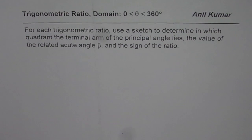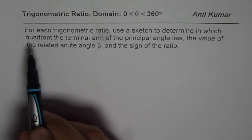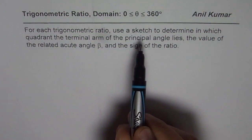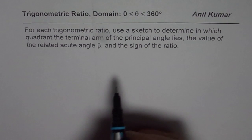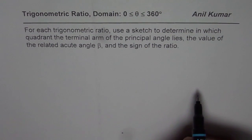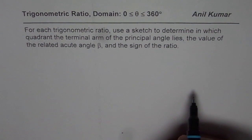I am Anil Kumar and in this video we will try to understand trigonometric ratios in the domain of 0 to 360 degrees. The question before us is: for each trigonometric ratio, use a sketch to determine in which quadrant the terminal arm of the principal angle lies, the value of the related acute angle beta, and the sign of the ratio. I'd like you to participate so that you also understand why we are answering these questions.